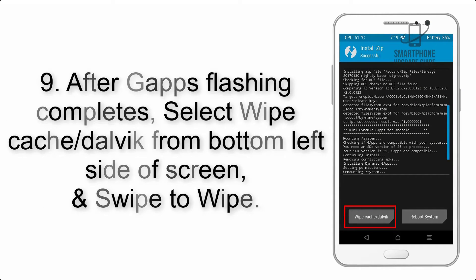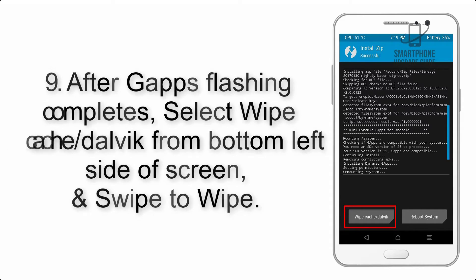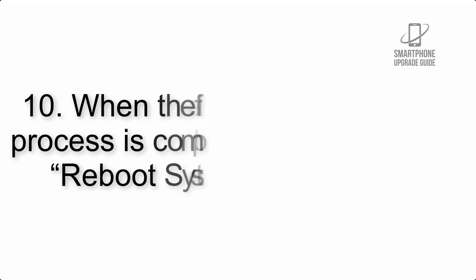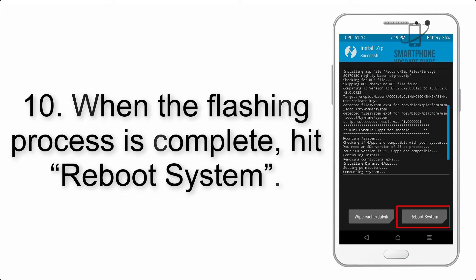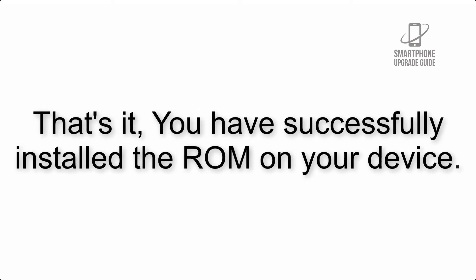Step 9: After G apps flashing completes, select Wipe Cache and Dalvik from the bottom left side of the screen and swipe to wipe. Step 10: When the flashing process is complete, hit Reboot System. That's it — you have successfully installed the ROM on your device.